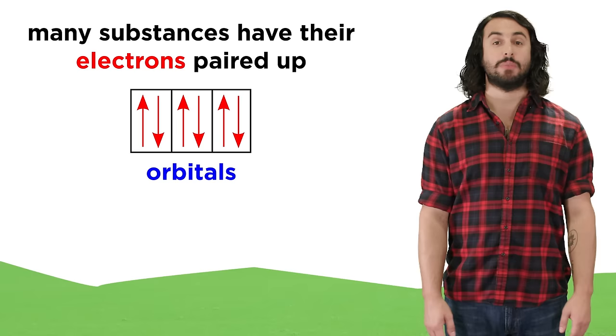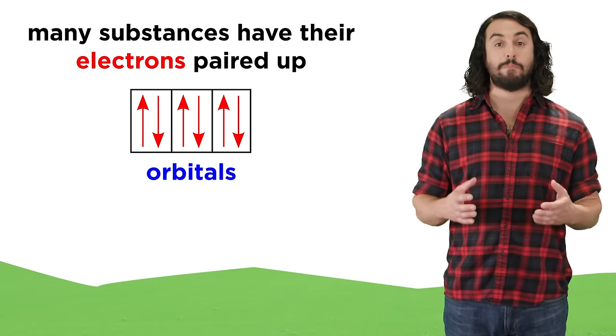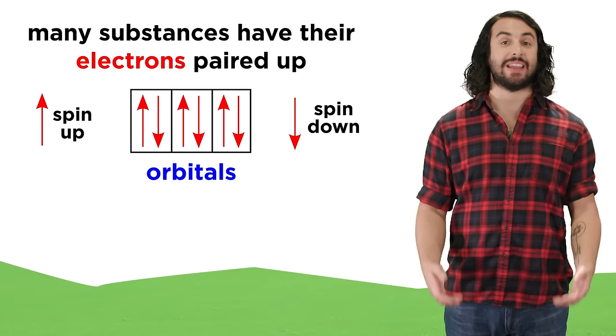But for our purposes here, it will suffice to understand that most materials contain atoms with all of their electrons paired up in orbitals, with one spin up and one spin down, such that they cancel each other out.